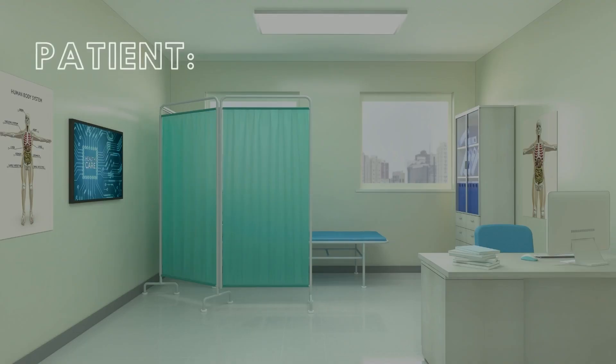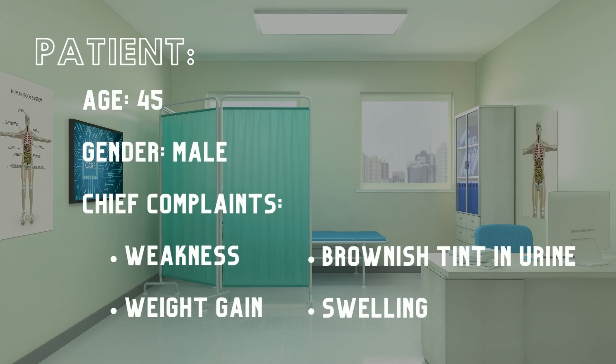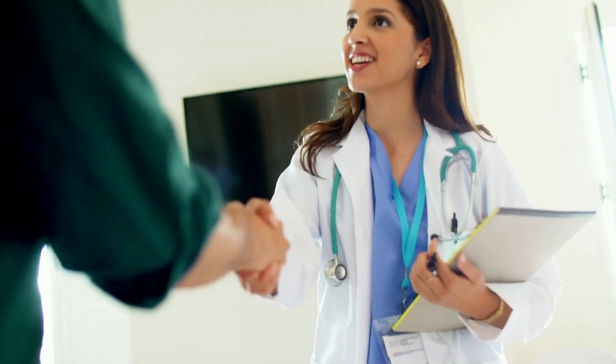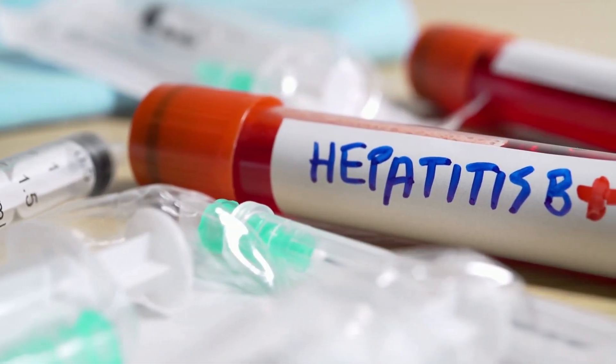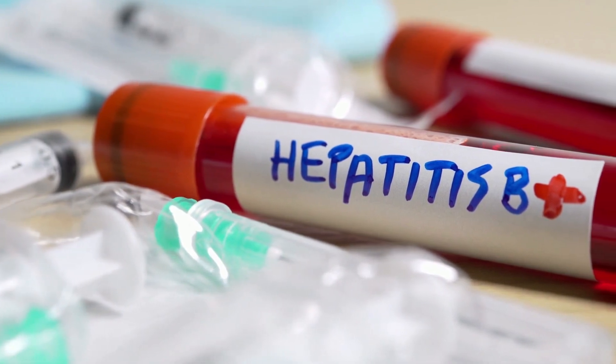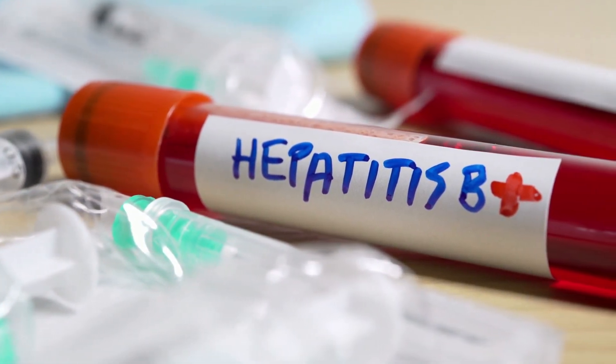You receive your patient's file and take a look: age 45, gender male, chief complaints of weakness and weight gain including 15 pounds in 3 weeks, a brownish tint in his urine, and swelling on the right side of his abdomen in the hypochondriac region. You invite the patient into your office for an examination. You ask about his occupation and he tells you he is a long-haul, cross-country truck driver. You also notice he has one tattoo on each forearm. Because tattoos involve direct blood contact, this indicates a potential risk of hepatitis. His patient history reveals a diagnosis and treatment for acute hepatitis B two years ago, but currently he is asymptomatic for hepatitis B.